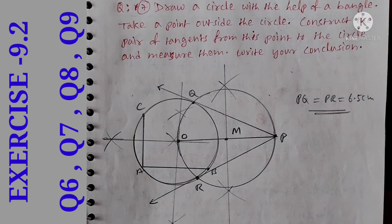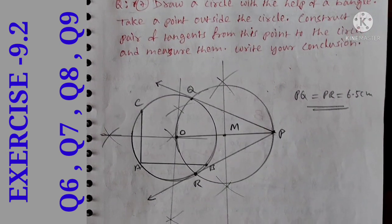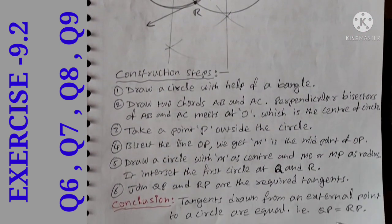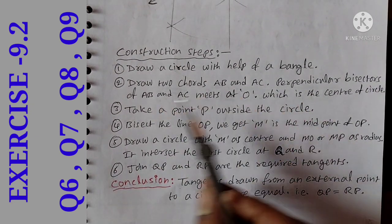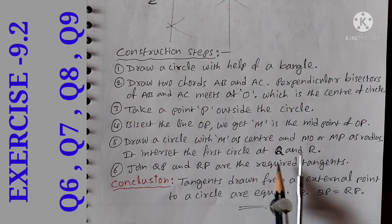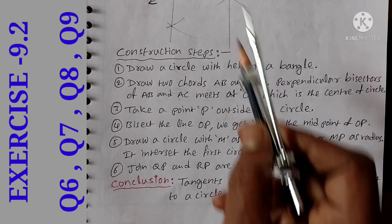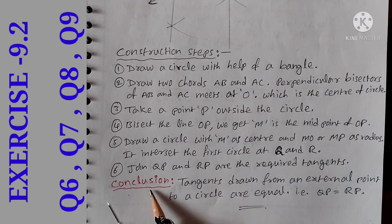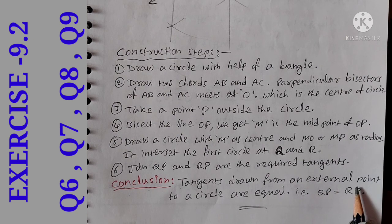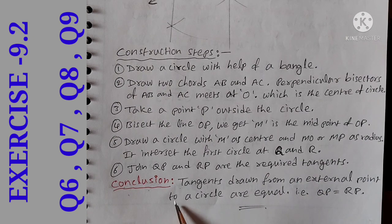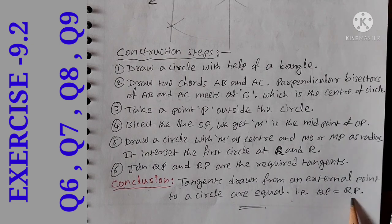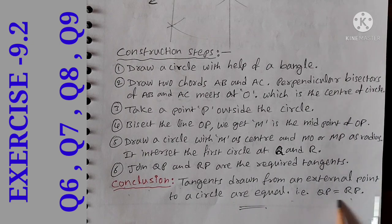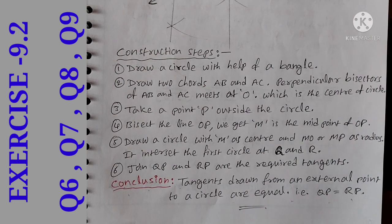We note the construction steps. Here is the conclusion: tangents drawn from an external point to the circle are equal. The two tangents QP and RP are equal — the entire length is equal to 6.5 cm.